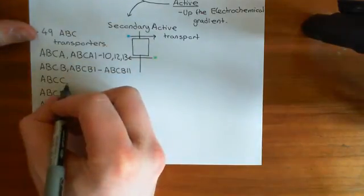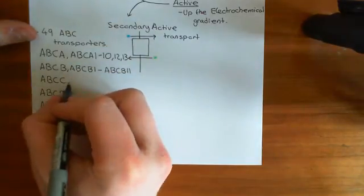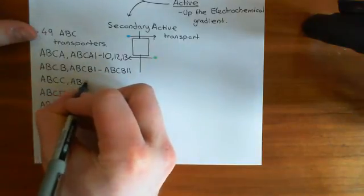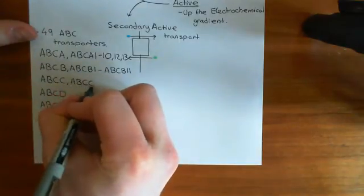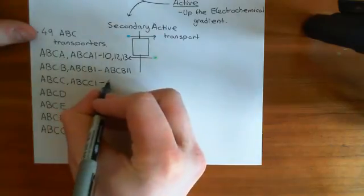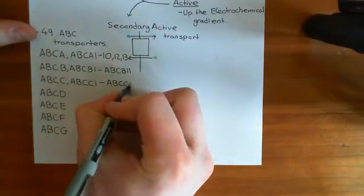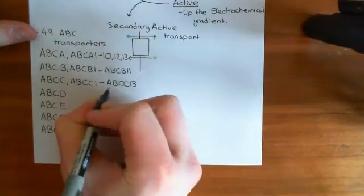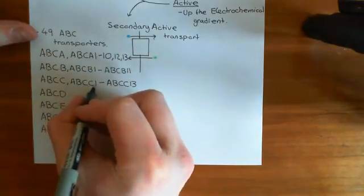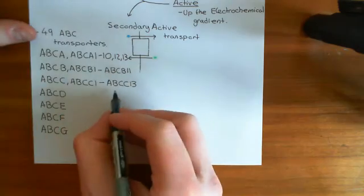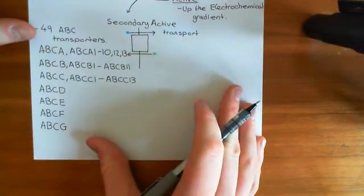The ABCC family has a beautiful naming system: ABCC1 all the way up to ABCC13 — ABCC1, ABCC2, ABCC3, ABCC4, all the way up to ABCC13.